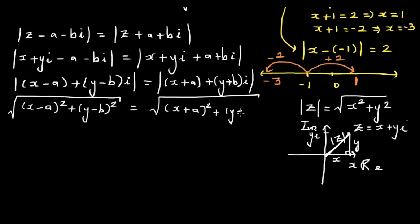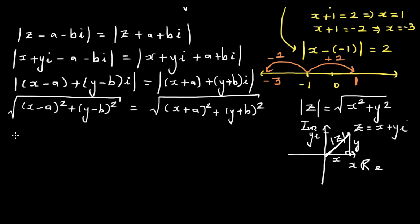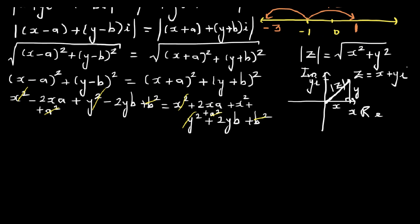Now squaring both sides and expanding: cancel x² from both sides, cancel y² from both sides, cancel a² from both sides, and cancel b² from both sides. What remains is -2xa - 2yb = 2xa + 2yb.